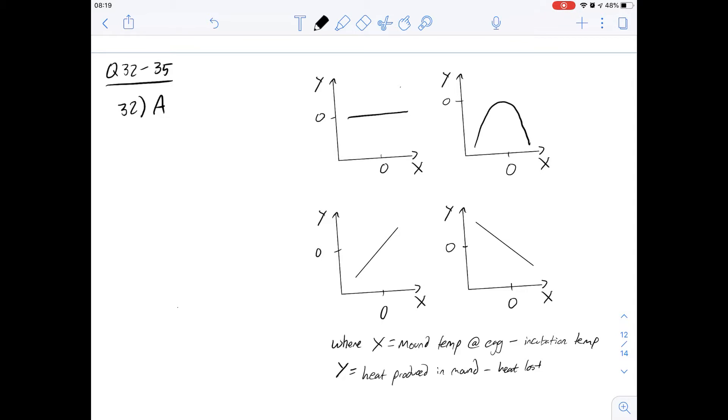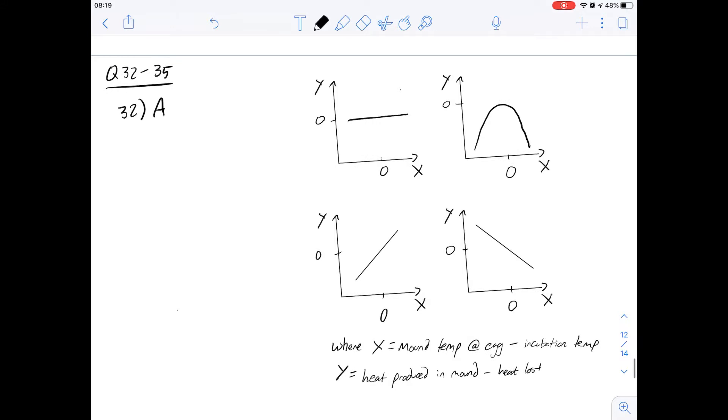If we look at 33, it says according to figure 1, of the following, what estimate is closest to the total amount of energy produced by the Mallee fowl during its 60-day incubation. So this one is quite tough if we're going to be looking at a curved graph that isn't that easy to read. I think it's best just to simplify it.